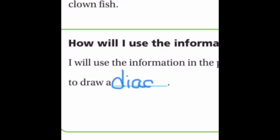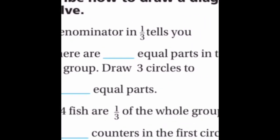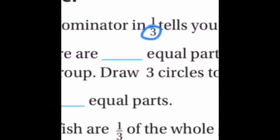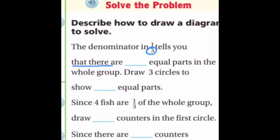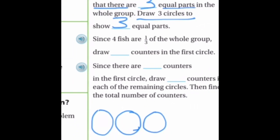To solve this, we're going to draw a diagram — or picture, they're the same thing. The denominator in one third tells you that there are three equal groups. So we're going to draw three circles to show those three equal parts: one, two, and three. We have three equal groups because of the denominator of three. One third tells us three equal groups.